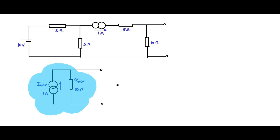Let us apply the maximum power transfer theorem to a DC circuit network: 10 volts, 10 ohms, 5 ohms, a 1 amp current source, 5 ohms, 10 ohms, with external output terminals AB. This has a Norton equivalent where I_Norton = 1 amp and R_Norton = 10 ohms, as worked out in an earlier Norton circuit example.